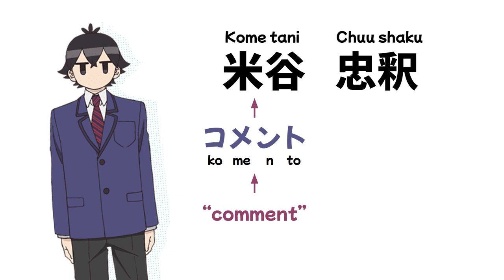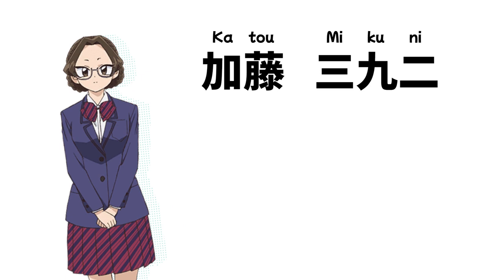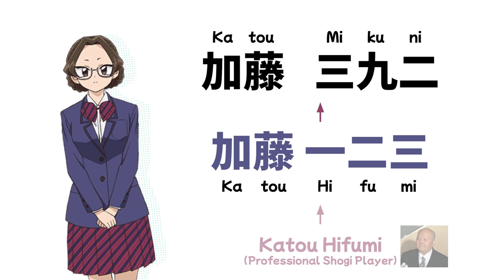Next up is the first of Komi-san's school field trip buddies, Katou Mikuni. Her name isn't really a pun but a reference to the real-world shogi player Katou Hifumi, fitting because she is very passionate about shogi and it is even hinted that Hifumi is her grandfather. Both of their given names are made of number kanji: Mikuni uses the numerals for three, nine, and two, while Hifumi is one, two, three.